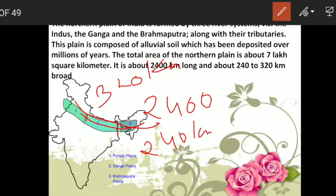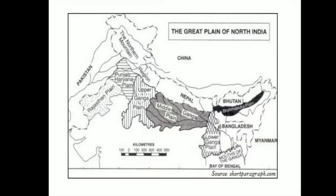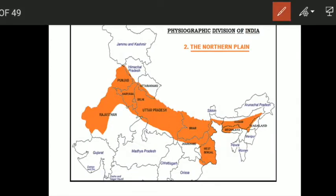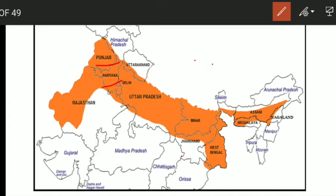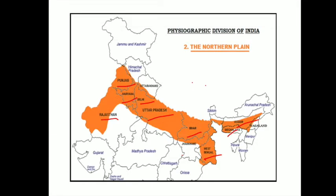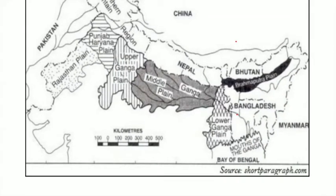Now let me tell you about the different divisions of the Northern Plains of India. Such a vast plain has been divided into three sections. The western part — I will show you here — is the western part of the Northern Plains, formed from the River Indus and its tributaries. These states like Punjab and Haryana come under this section.